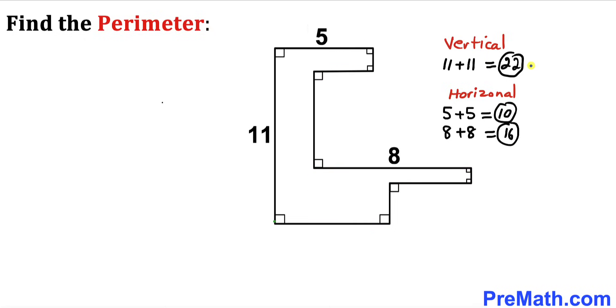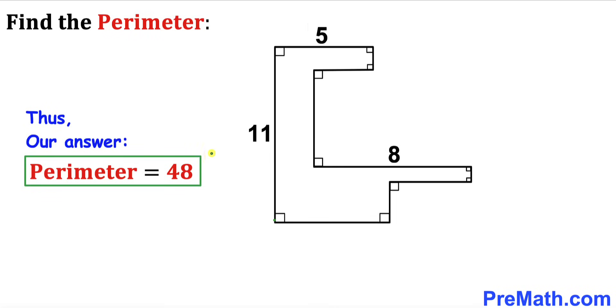Let's go ahead and add all these numbers up, and that is going to give us our perimeter is going to be equal to 48. So thus the perimeter of this given shape turns out to be 48 units and that's our final answer.